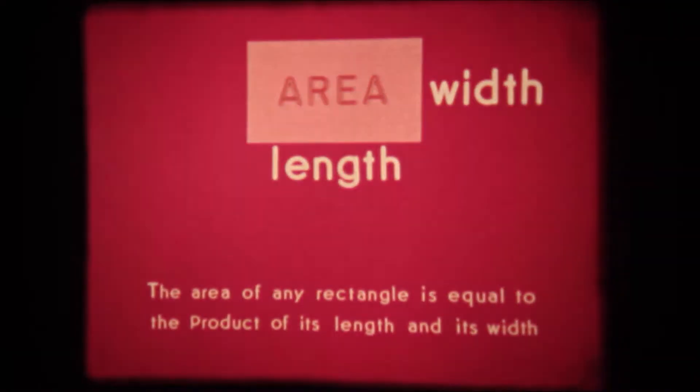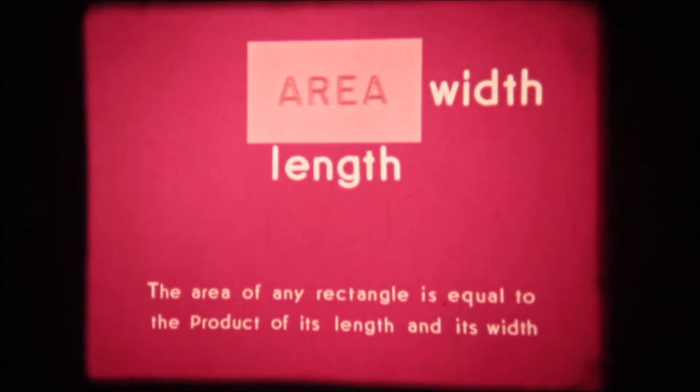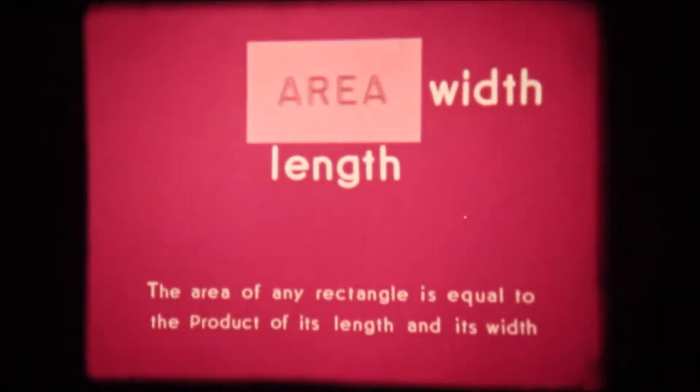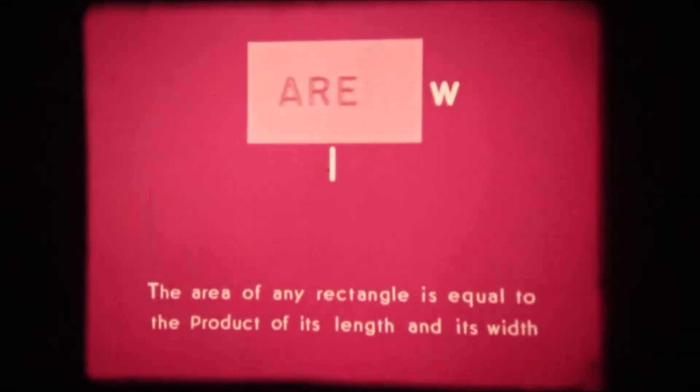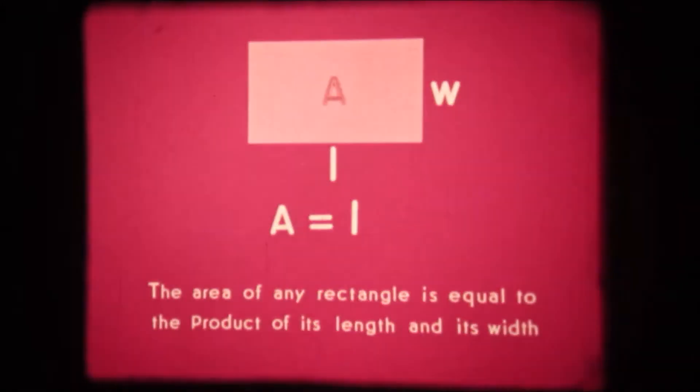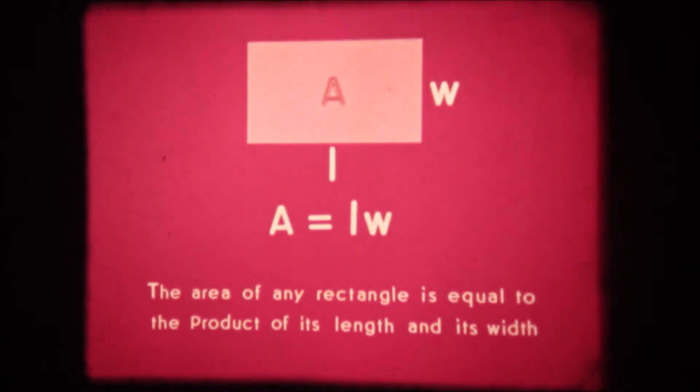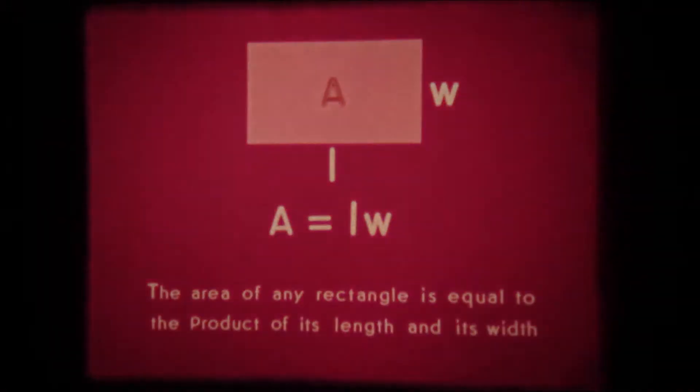Algebra gives us a means of writing this statement in mathematical form instead of in words. To do so we must first choose some symbols. Because we like to do things the easy way we will choose the initial letters of the words: L for length, W for width, and A for area. Our statement says that the area is equal to the length multiplied by the width. Now we have a mathematical equation which is a sort of shorthand for the statement of relationship. We call it an algebraic statement.